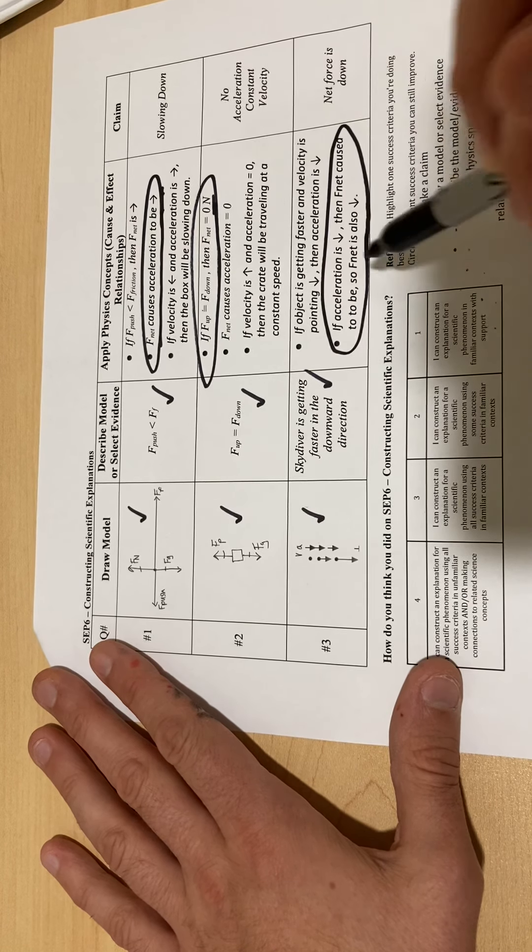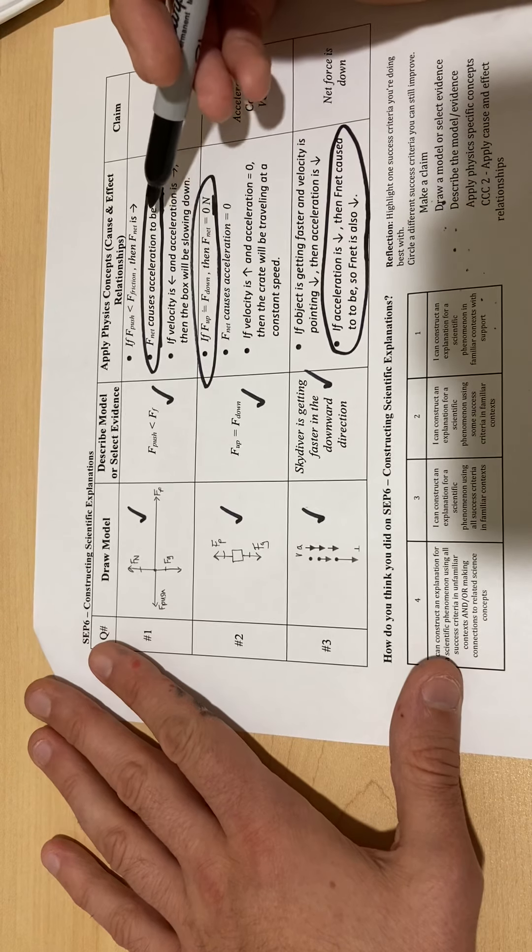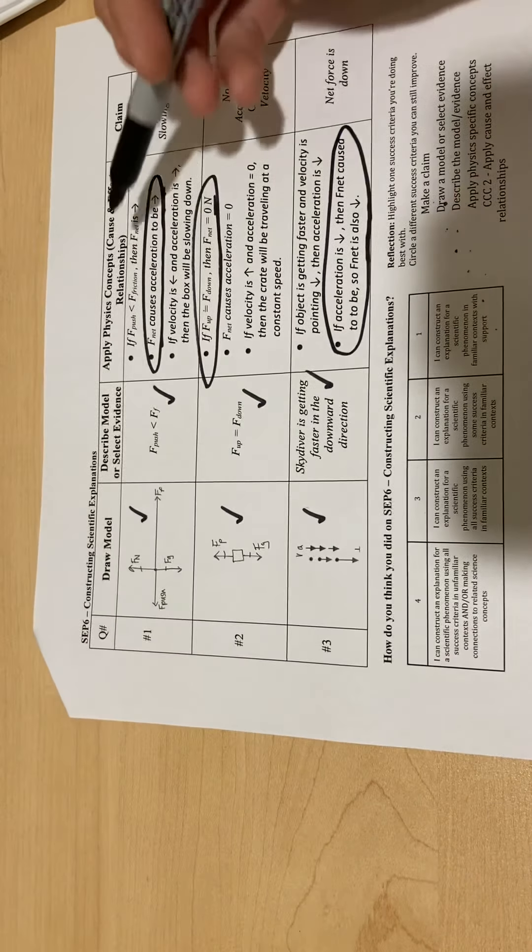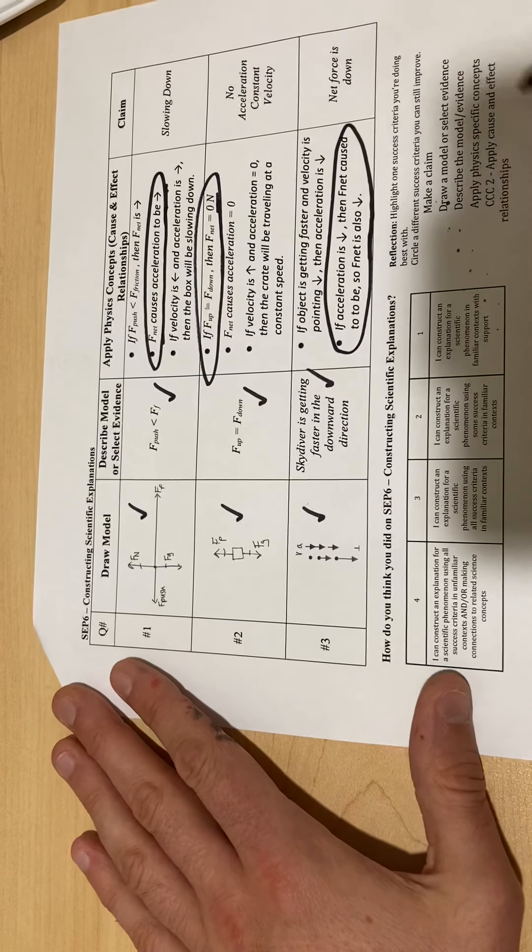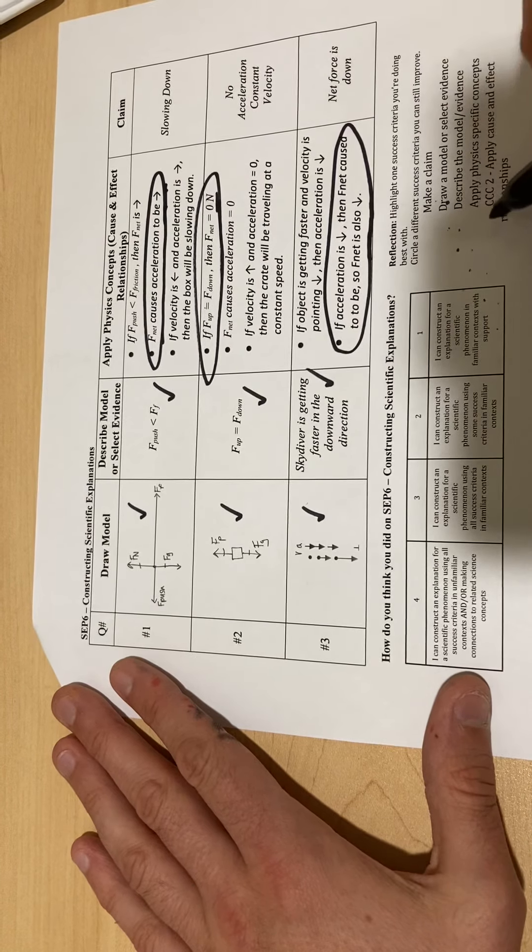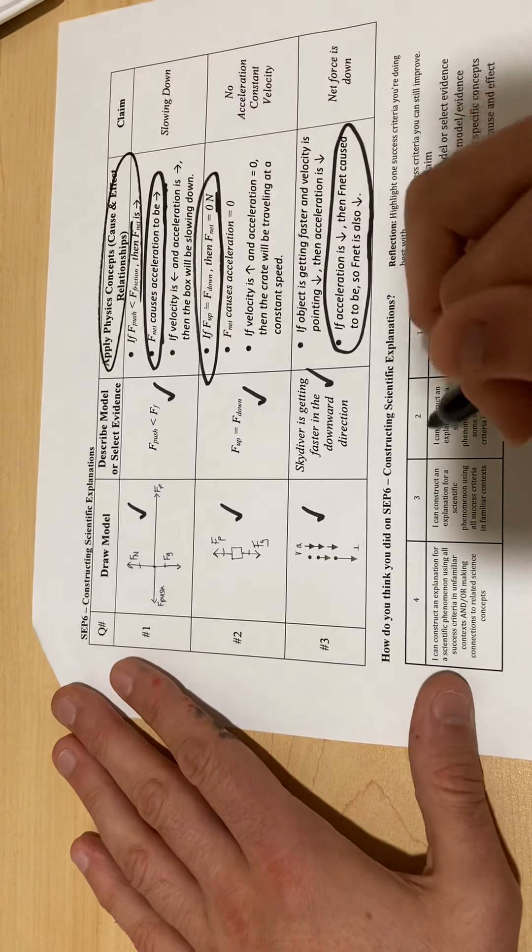Maybe we start to see a pattern here. Even though there are less circles overall, they're all in the same column. This is a pattern that you might still need to work on - that applying cause and effect physics concepts relationships. So that would be a two.